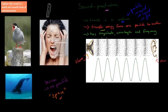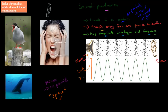Sound waves have something called amplitude, wavelength, and frequency. Amplitude is basically the volume — it's the size, or height, of the actual wave. The higher the wave, the louder the sound. So volume is the amplitude.